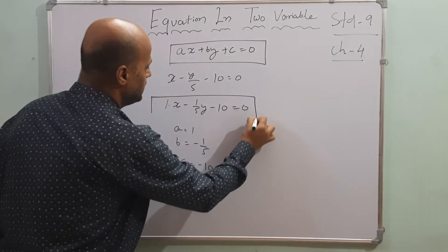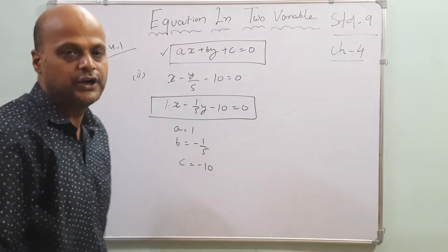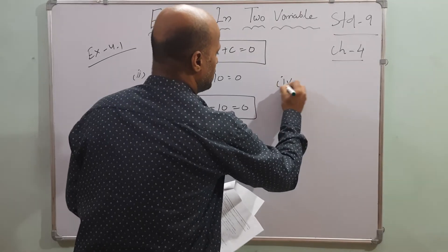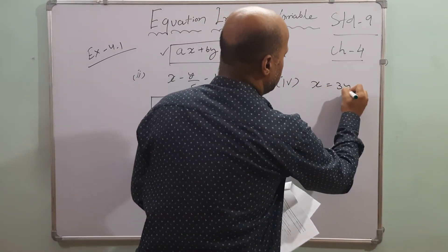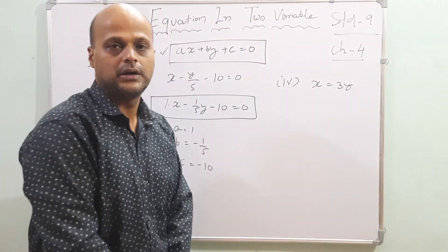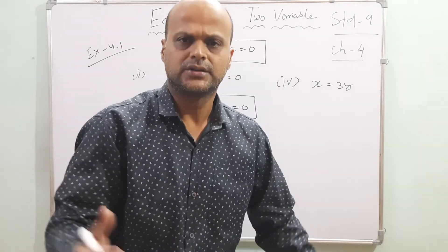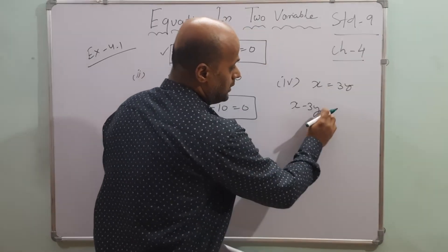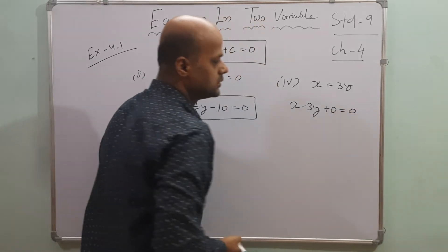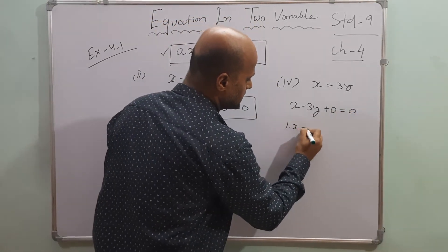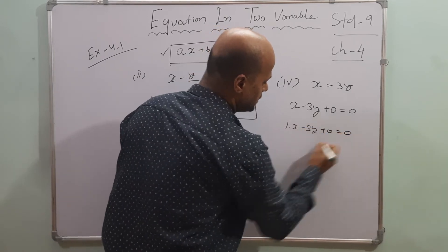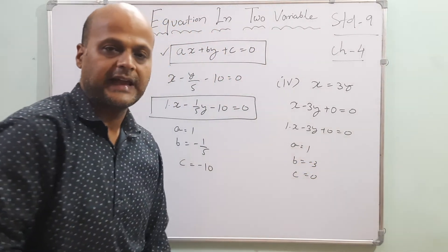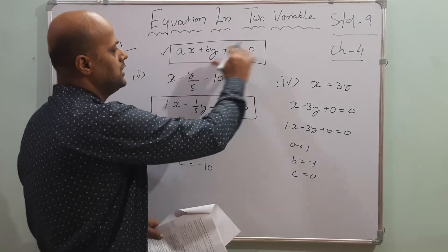Fourth bit: x equals 3y. We can write this as x minus 3y plus 0 equals 0. Here a equals 1, b equals minus 3, c equals 0. In this manner, all statements must be represented in the linear equation in two variables form ax plus by plus c equals 0.